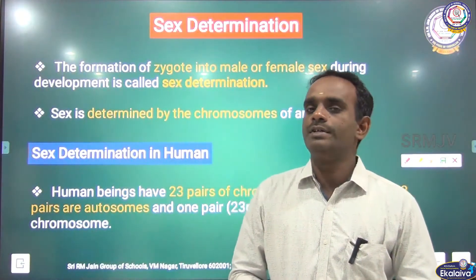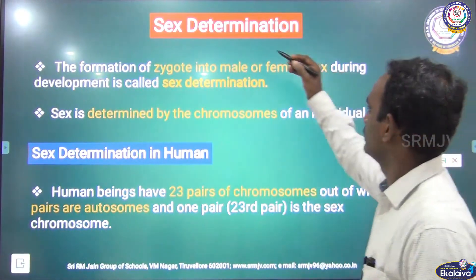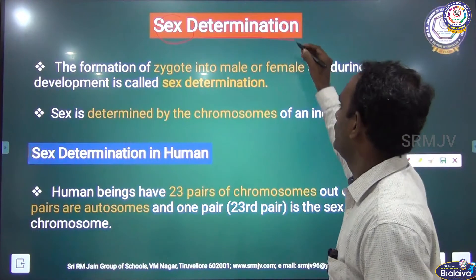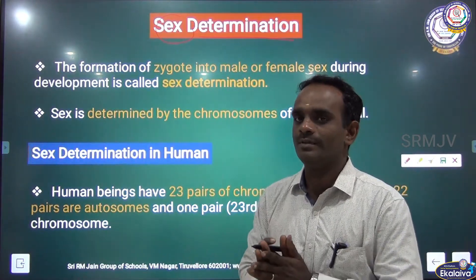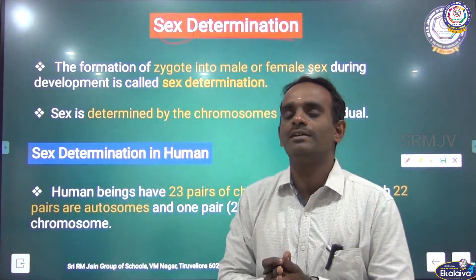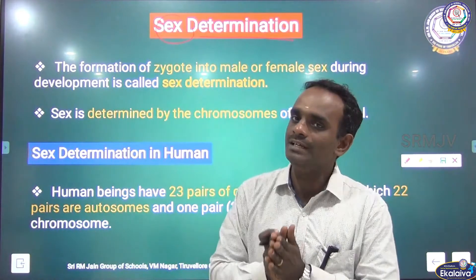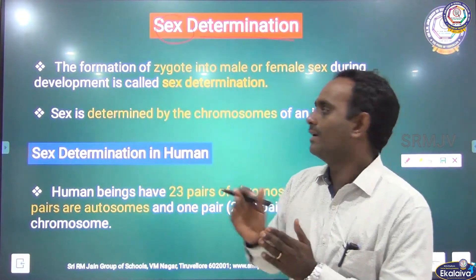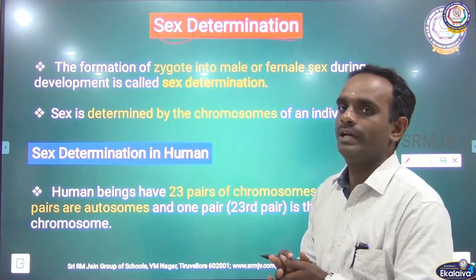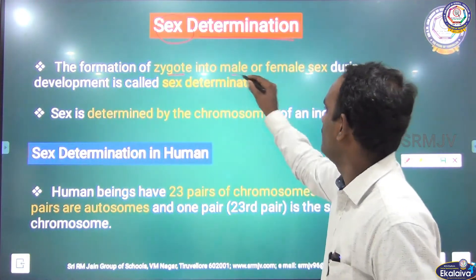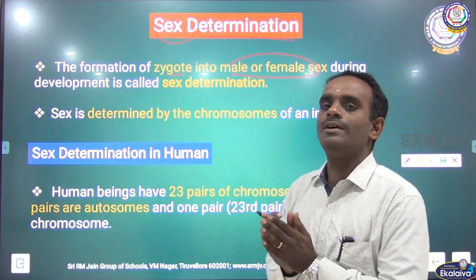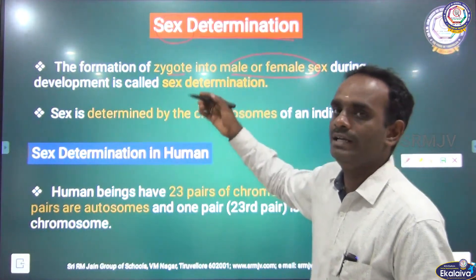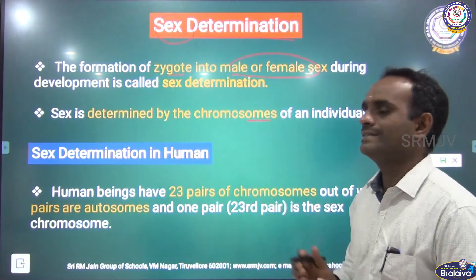Today we are going to discuss about Sex Determination. The sex determination is mainly determined by the chromosomes of an individual. Chromosomes are a long thin thread-like structure which is present inside the nucleus. That chromosome only determines the sex of an individual. So the formation of a zygote into male or female sex during development is called Sex Determination.